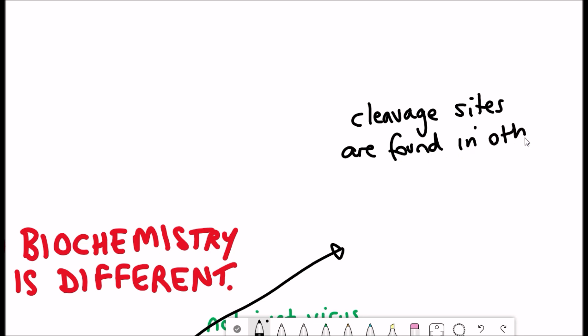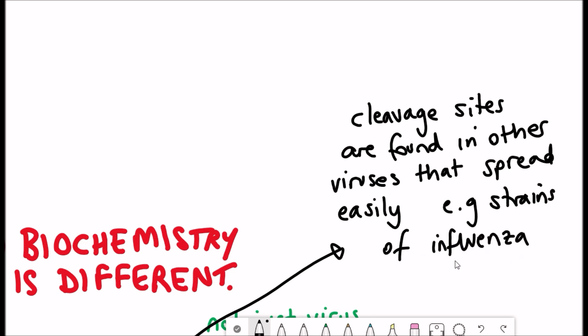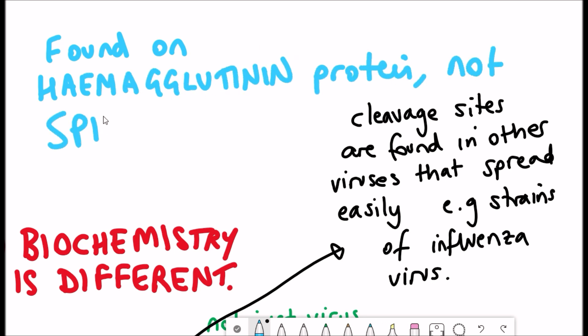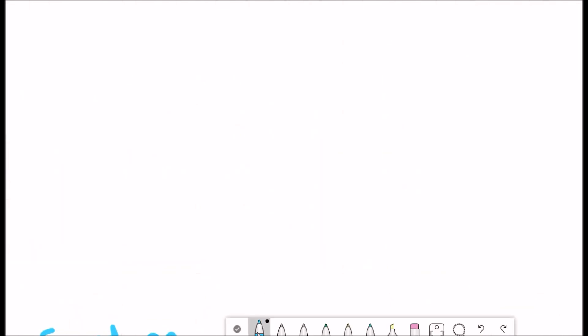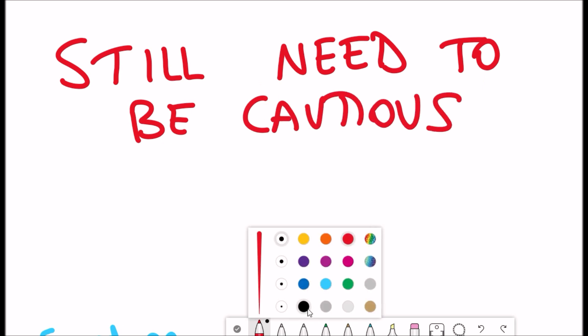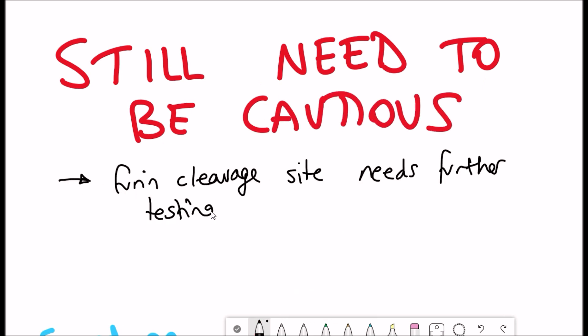So the presence of these cleavage sites then might explain why the novel coronavirus is spreading so fast, because the cleavage sites are also found in other viruses that spread easily, such as strains of the influenza virus. And so this is because instead of the spike proteins, these hemagglutinin proteins have furin-like cleavage sites. However, whilst this research is really exciting, we still need to be cautious because we don't know how important these furin cleavage sites are and they do require further testing.